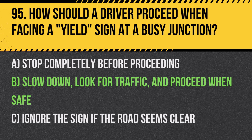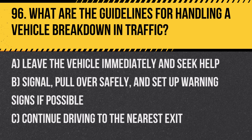Question 96: What are the guidelines for handling a vehicle breakdown in traffic? A. Leave the vehicle immediately and seek help. B. Signal, pull over safely, and set up warning signs if possible. C. Continue driving to the nearest exit. Answer: B. Signal, pull over safely, and set up warning signs if possible. This alerts other drivers and ensures your safety while waiting for assistance.